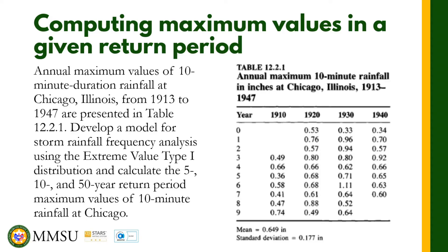Let us apply these formulas. Annual maximum values of 10-minute duration rainfall at Chicago, Illinois from 1913 to 1947 are presented in Table 12.2.1. Develop a model for storm rainfall frequency analysis using the Extreme Value Type 1 distribution, and calculate the 5, 10, and 50-year return period maximum values of 10-minute rainfall at Chicago. The mean and standard deviation are already given in the table, so we do not need to compute them.